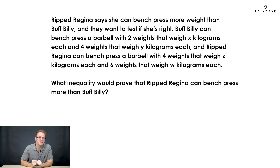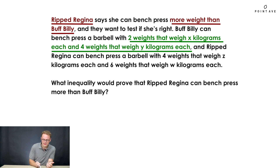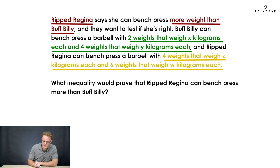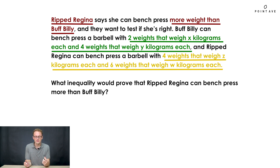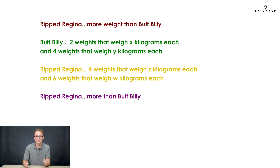Now let's apply this to our problem with Buff Billy and Ripped Regina. Right off the bat, we see 'Ripped Regina can bench press more than Buff Billy' — that will be our first key phrase. Then we see Buff Billy can bench press a barbell with two weights that weigh x kilograms each and four weights that weigh y kilograms each. Similarly, Ripped Regina has a barbell with four weights that weigh z kilograms each and six weights that weigh w kilograms each. And lastly, another relation: Ripped Regina can bench press more than Buff Billy. Putting that together, we have all our key phrases pulled out from the word problem.